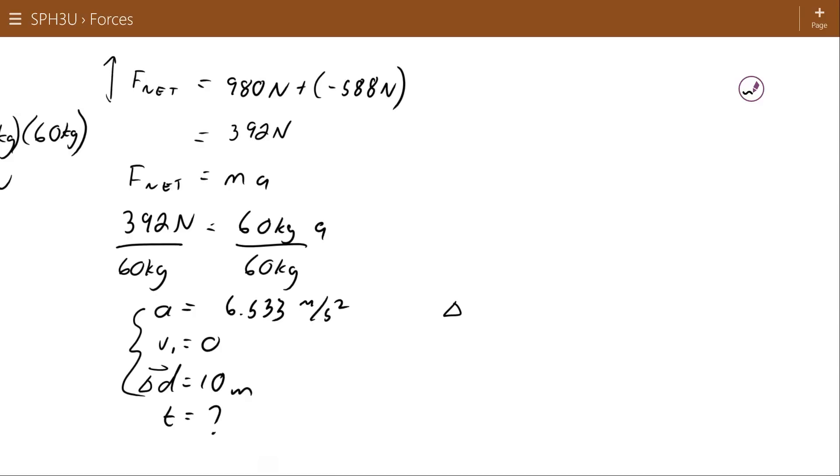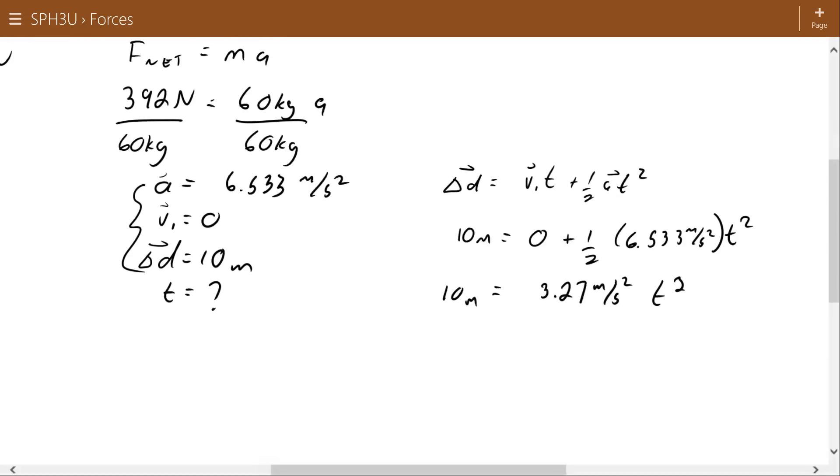That should be a displacement. The displacement is equal to v1·t plus one-half a·t squared. That's one of our five equations of motion, not from all the way back in unit one. So 10 meters is equal to that whole term goes to zero because of the zero speed, plus one half 6.533 meters per second squared t squared. So 6.533 divided by 2 works out to 3.27 meters per second squared. If I divide both sides by 3.27 meters per second squared, then my t squared works out to 3.06 seconds.